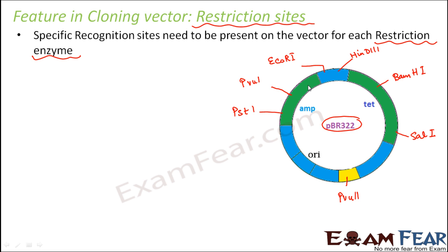Similarly, if you want this cut by EcoRI, that will also work because its recognition sequence is present here. But if you think of a vector or plasmid DNA which has no restriction sites, the restriction enzymes will not be able to operate. If they cannot operate, the vector cannot be cut. If you cannot cut the vector, it will not be able to combine with the foreign piece of DNA, so recombinant DNA will not form. For the formation of recombinant DNA, it is very important that restriction sites are present on your vector DNA so the DNA scissors can do their job.